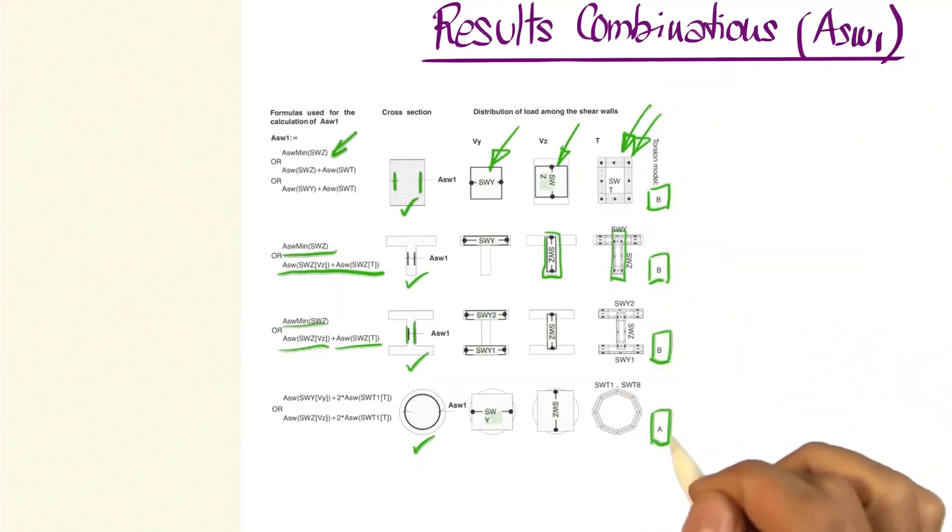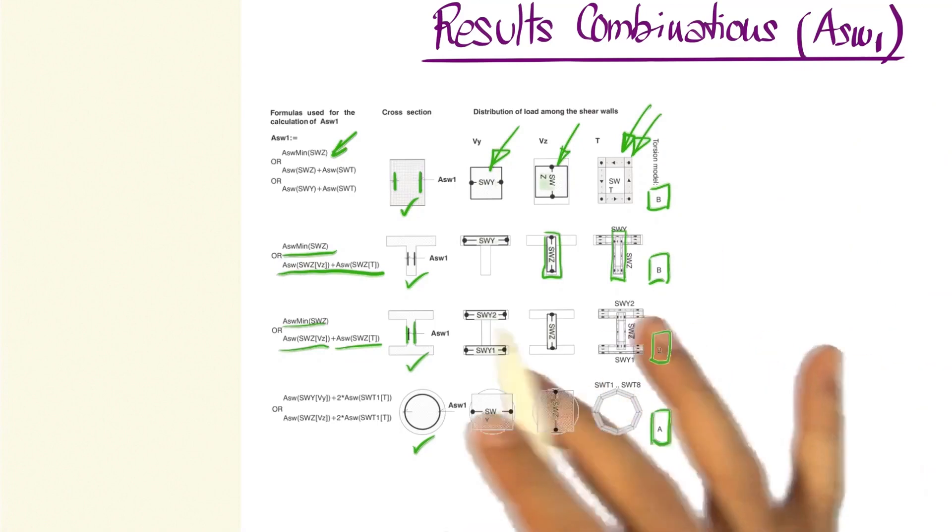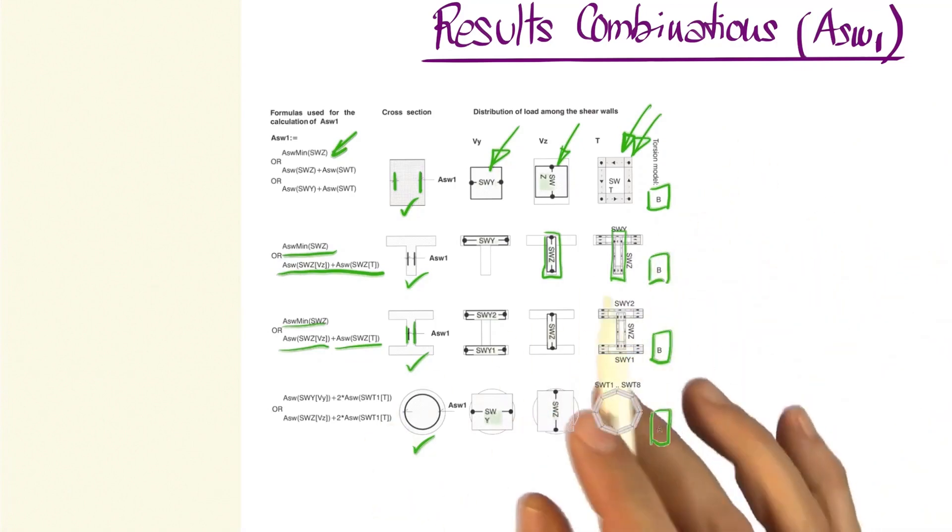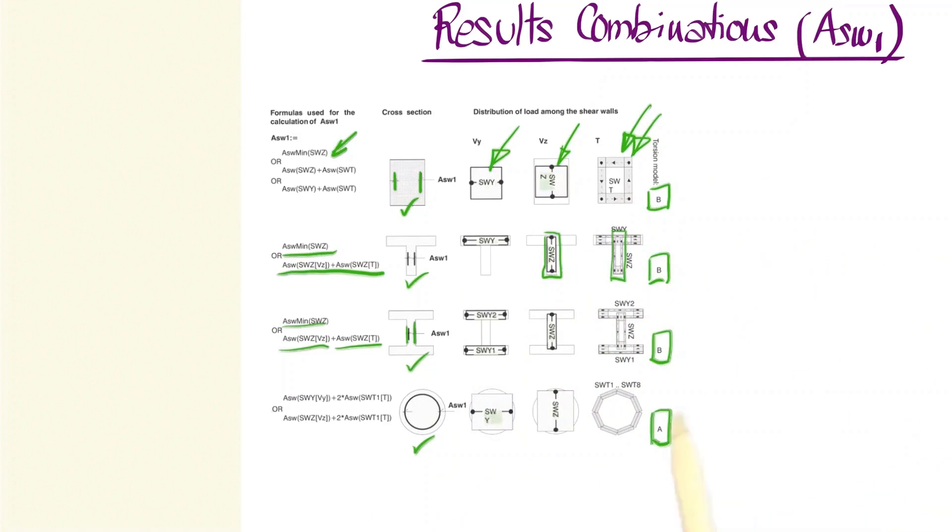If, for example, we use model A for a circular cross section, although we've seen that for a circular cross section it's better to use the automatic mode, so that the values of torsion AK,